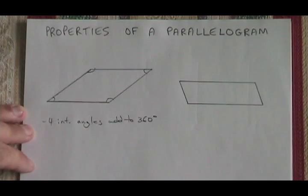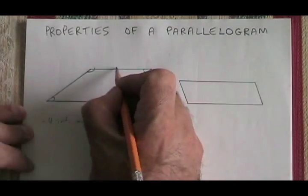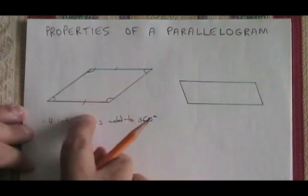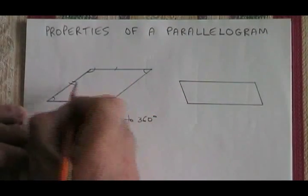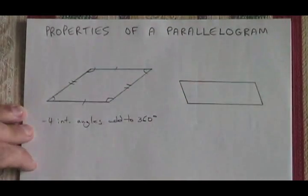A parallelogram has opposite sides that are congruent, and this is signified in this way. Both pairs of opposite sides are congruent.